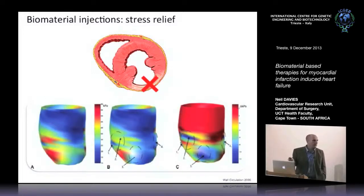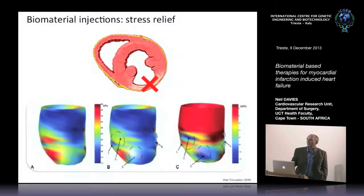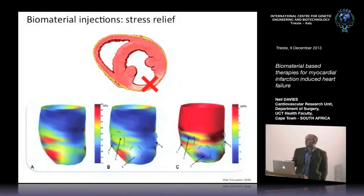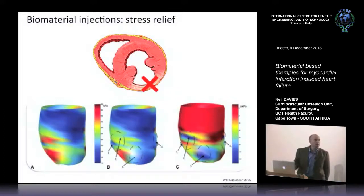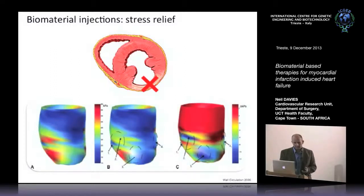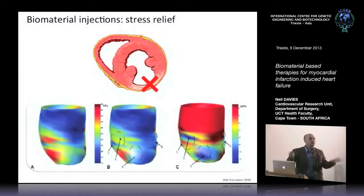In this infarcted heart finite element model, red is high stress and blue is low stress. Remote regions show minimal stress, but you see high stress at the infarct and substantial stress in the border zone, which presumably drives infarction expansion. If you inject hydrogels — proportional to the amount injected — you see substantial reductions of stress in the border zone. We need experimental data showing delivery of biomaterials reduces stress and potentially reduces progression to heart failure.